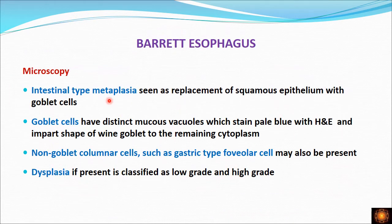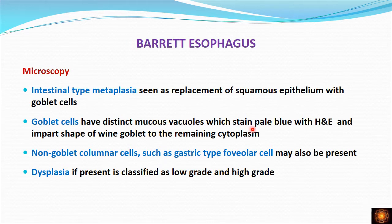On microscopy, the squamous epithelium has been replaced by the intestinal type of metaplasia — columnar cells along with goblet cells. The goblet cells have a distinct mucous vacuole which stains pale blue on hematoxylin and eosin staining. The mucin present in the cytoplasm gives the shape of a wine goblet to the cytoplasm.